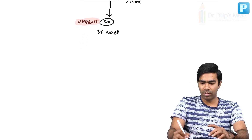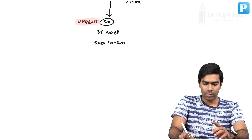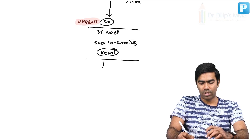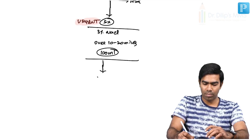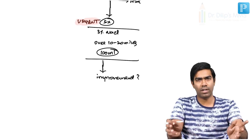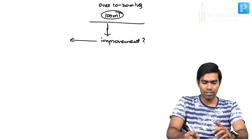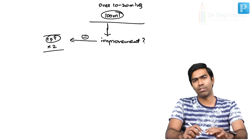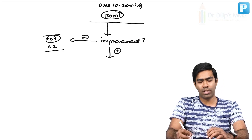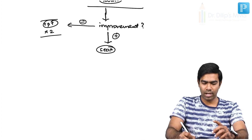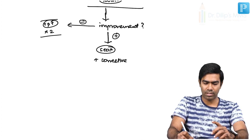Give 3% NaCl over 10 to 20 minutes at a dose of 100 ml, then wait for improvement. Improvement here means improvement in neurological symptoms, because symptoms in hyponatremia are neurological. If there is no improvement, you can repeat for up to 2 more boluses — a total of 3 boluses. If there is good improvement, stop the boluses and start applying the corrective measures.